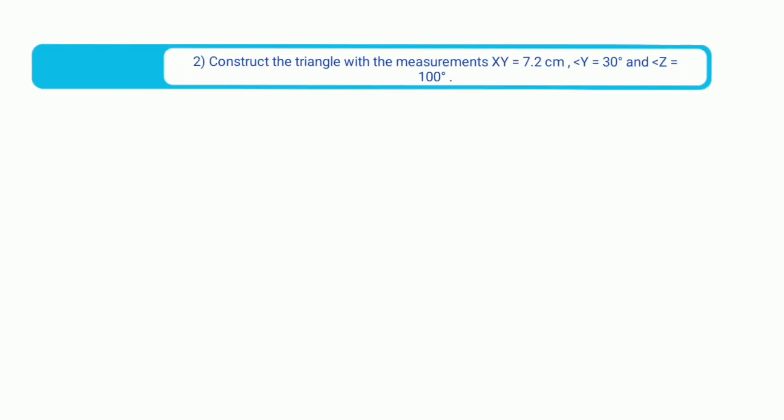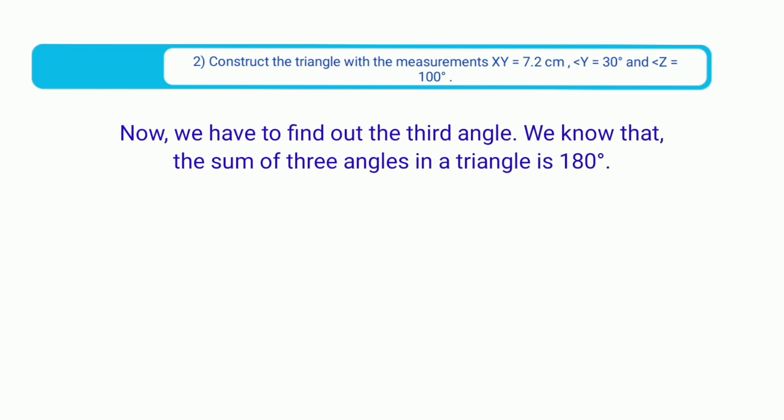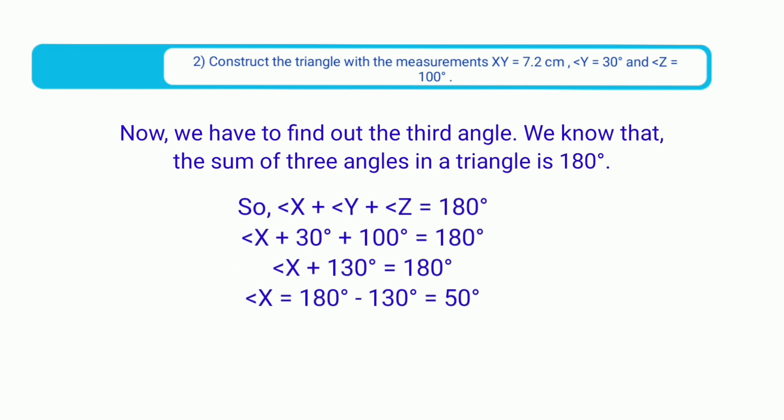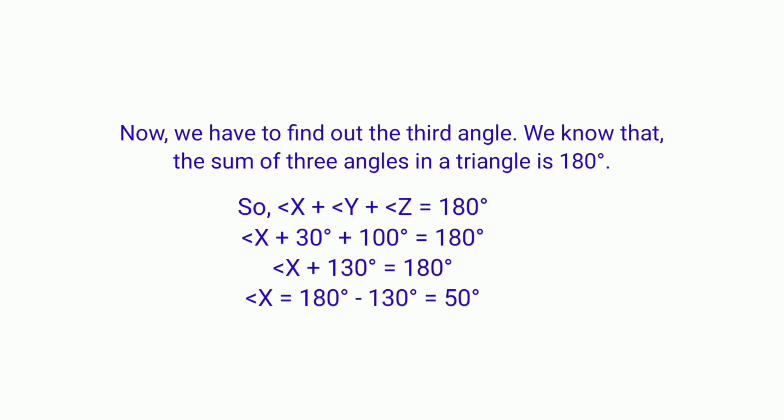Second sum: Construct the triangle XYZ with measurements XY equal to 7.2 cm, angle Y equals to 30 degrees, and angle Z equal to 100 degrees. We find the third angle: angle X plus 30 plus 100 equals 180 degrees, so angle X equals 180 minus 130, which is 50 degrees.